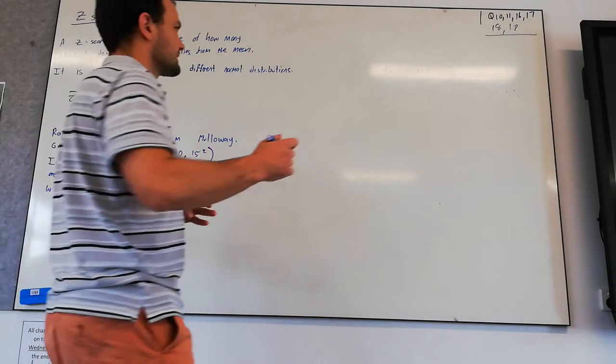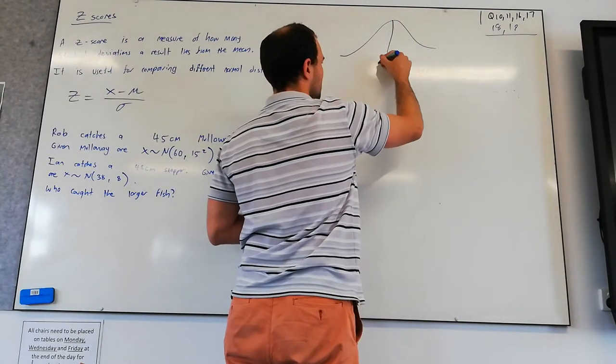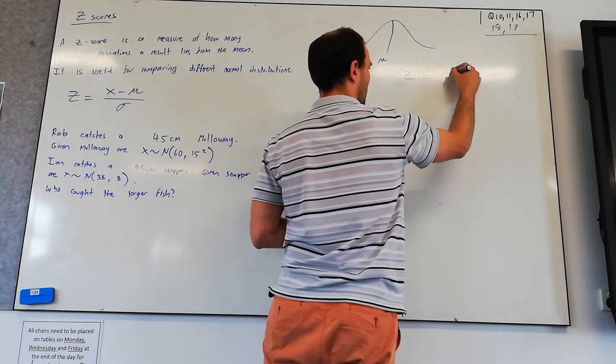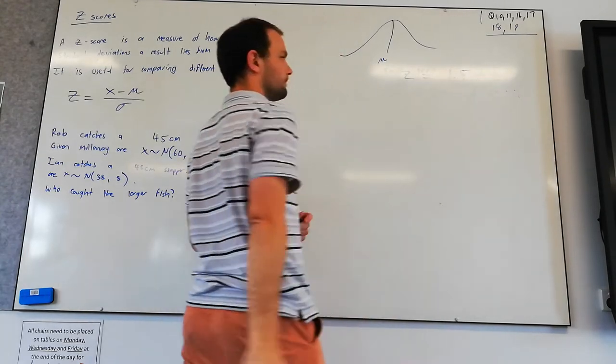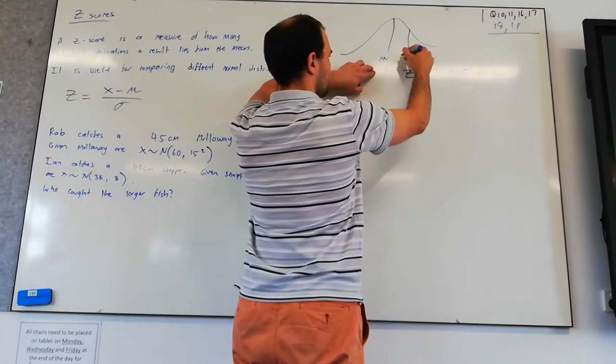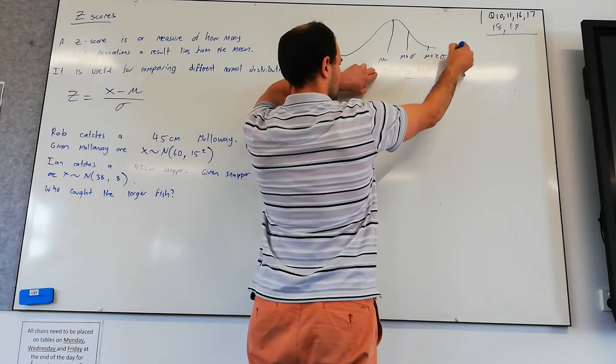For instance, let's say we have a distribution and here's the mean. Let's say you had a z-score of 1.5. So if this is our mean, this is going to be the mean plus the standard deviation. This is going to be the mean plus two standard deviations.